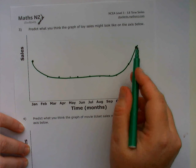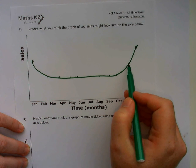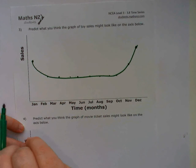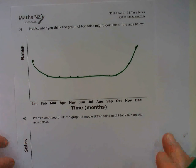So there's constant sales across the year in terms of birthdays. Lots of kids have birthdays every month. But then there's most in December, a little bit more leading up to December and a little bit more after December as well.